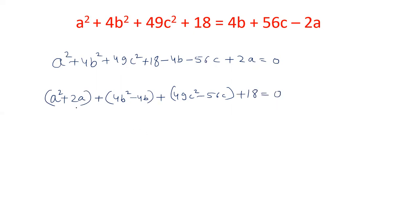Now a² + 2a can be made a perfect square by adding 1 to it. If we add 1 to a² + 2a, it will be (a + 1)² because it will be a² + 2a + 1, and that will be (a + 1)². So this term can be turned to perfect square by adding 1.